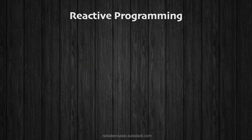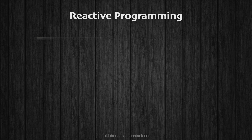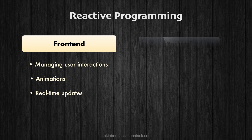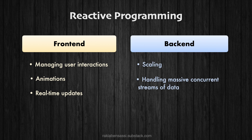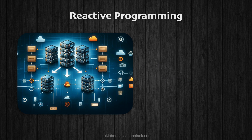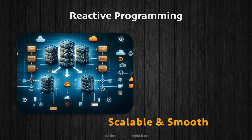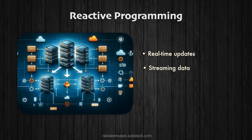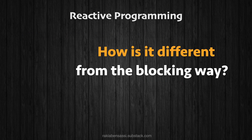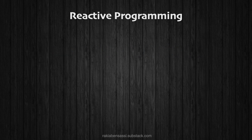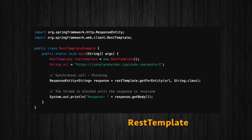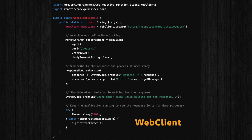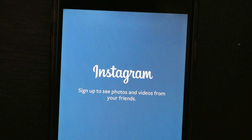Reactive programming principles are universal, but their applications differ. On the front-end, it's about managing user interactions, animations, and real-time updates seamlessly. On the back-end, it's about handling massive concurrent streams and data efficiently. Reactive patterns make microservices scalable and smooth — your app can handle tons of requests without getting stuck, perfect for real-time updates, streaming data, and users who hate waiting. In the past, we used RestTemplate, which is like standing in line at a cashier. WebClient, the reactive alternative, lets you place your order and go check Instagram until it's ready.